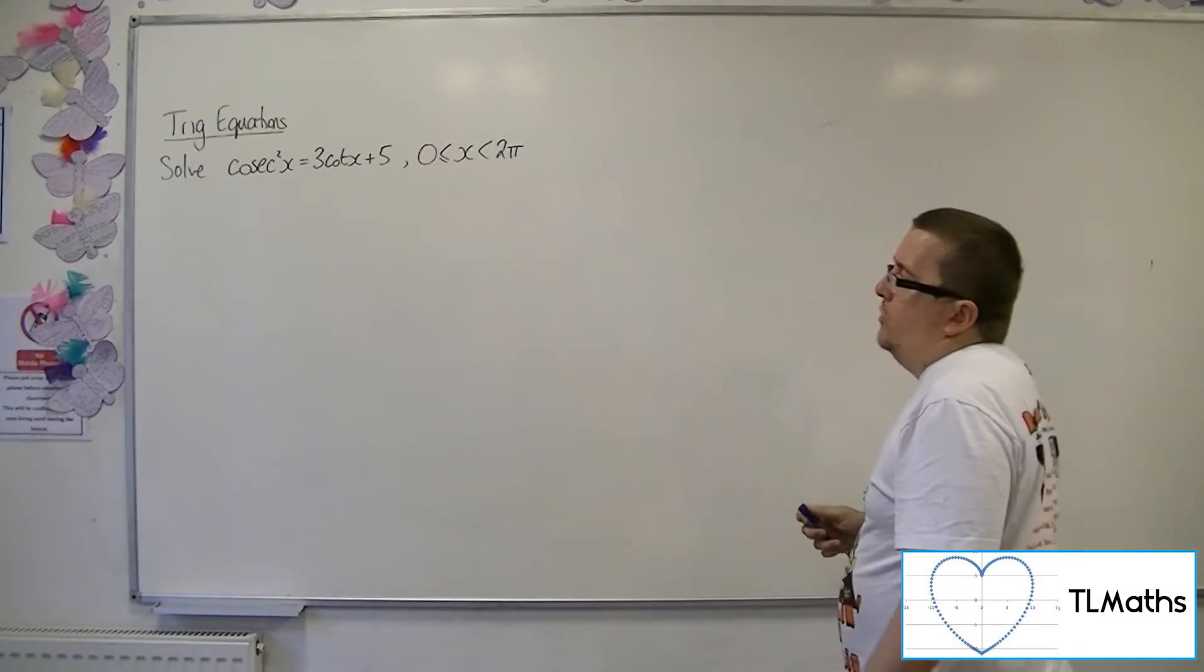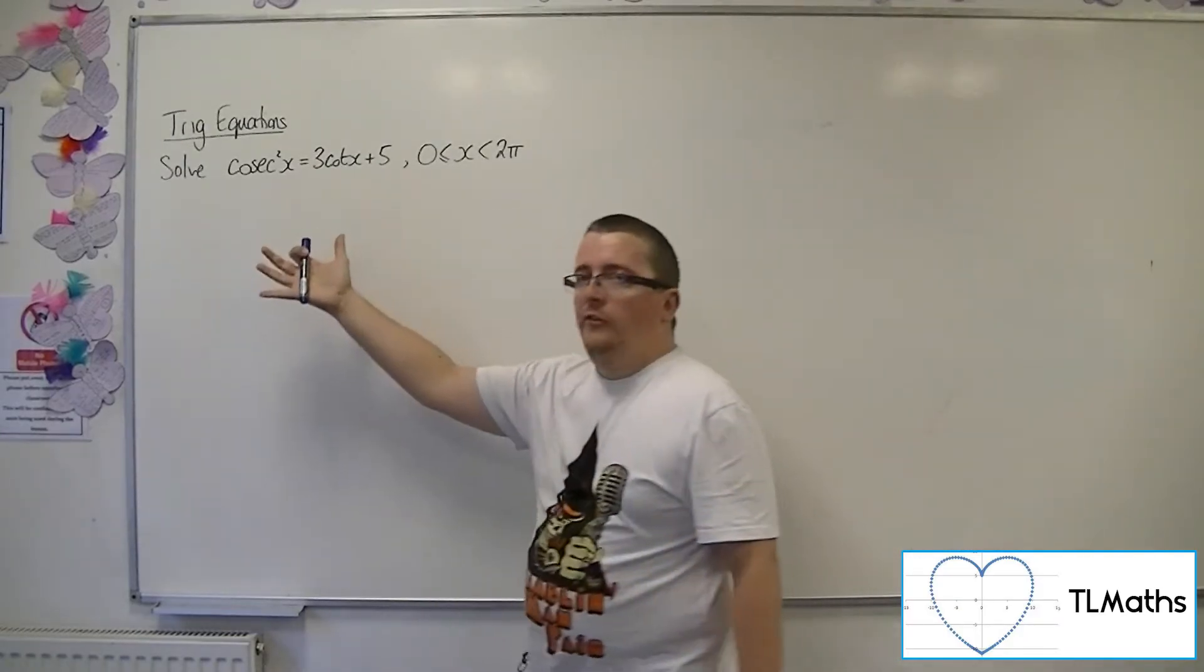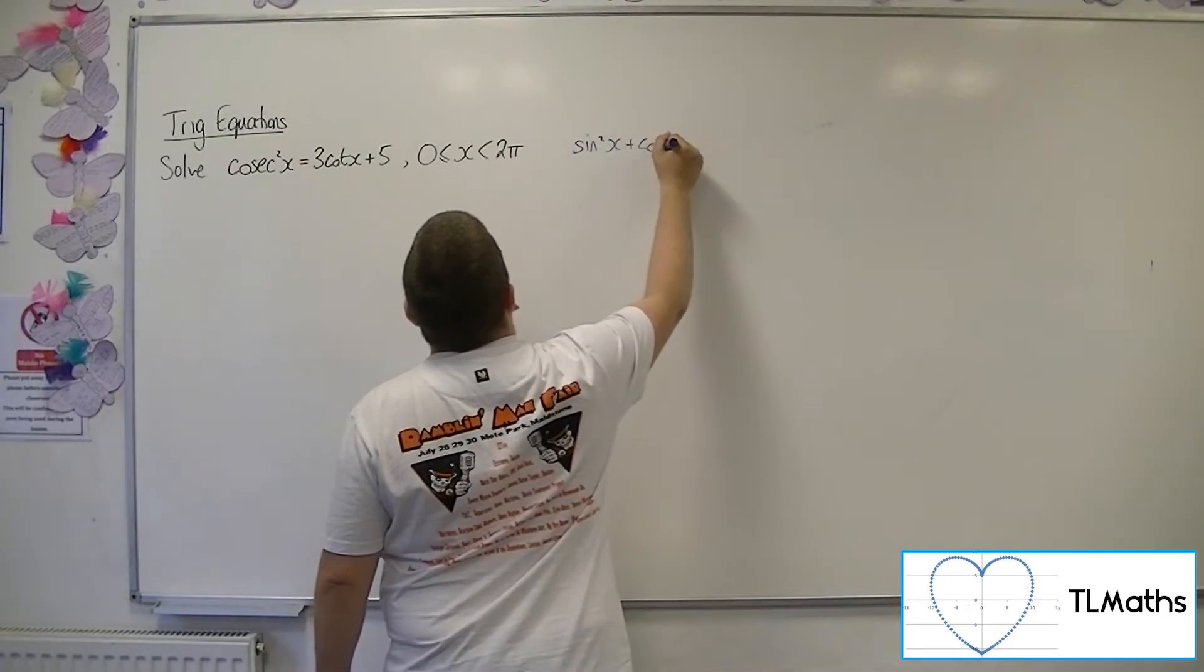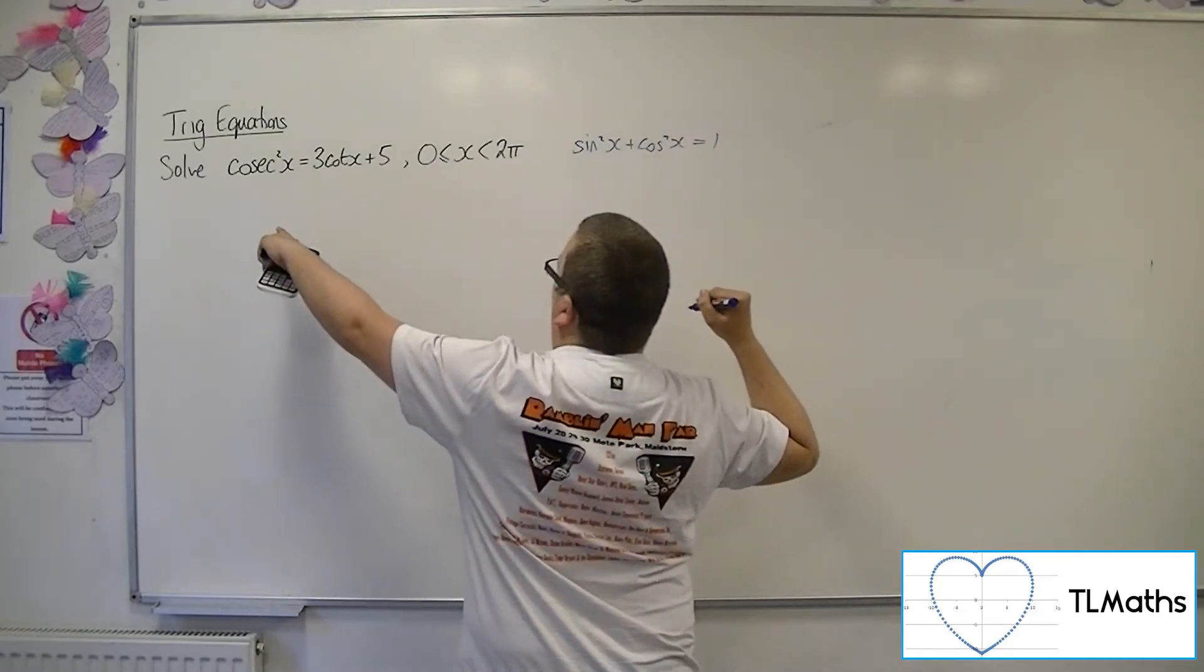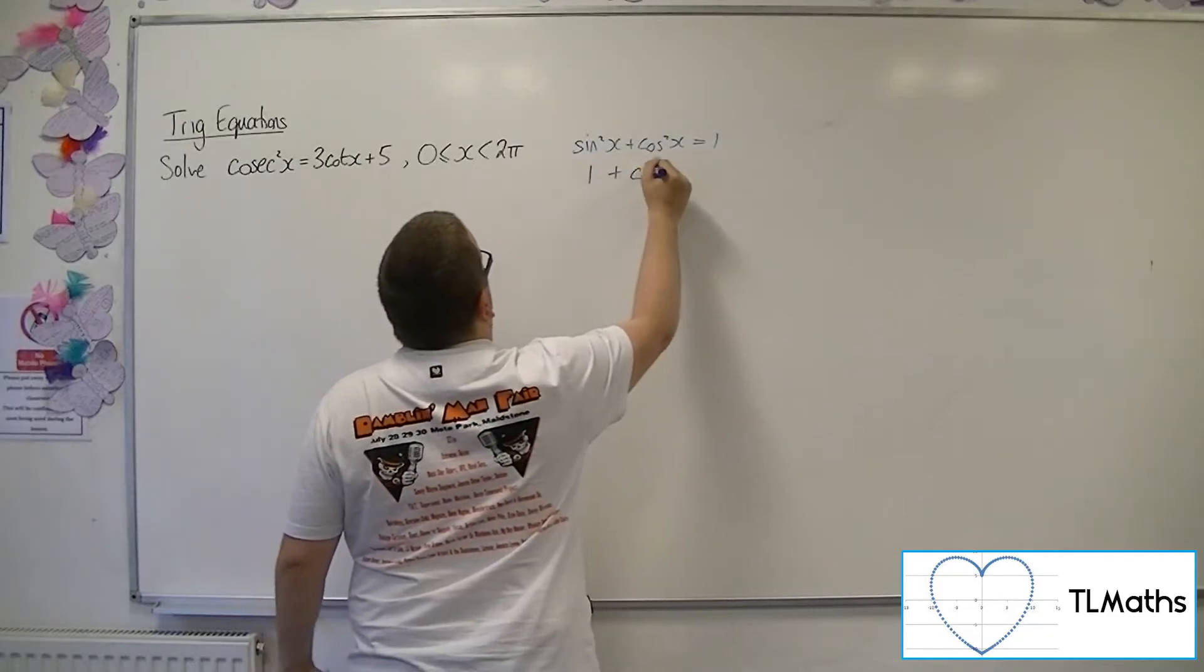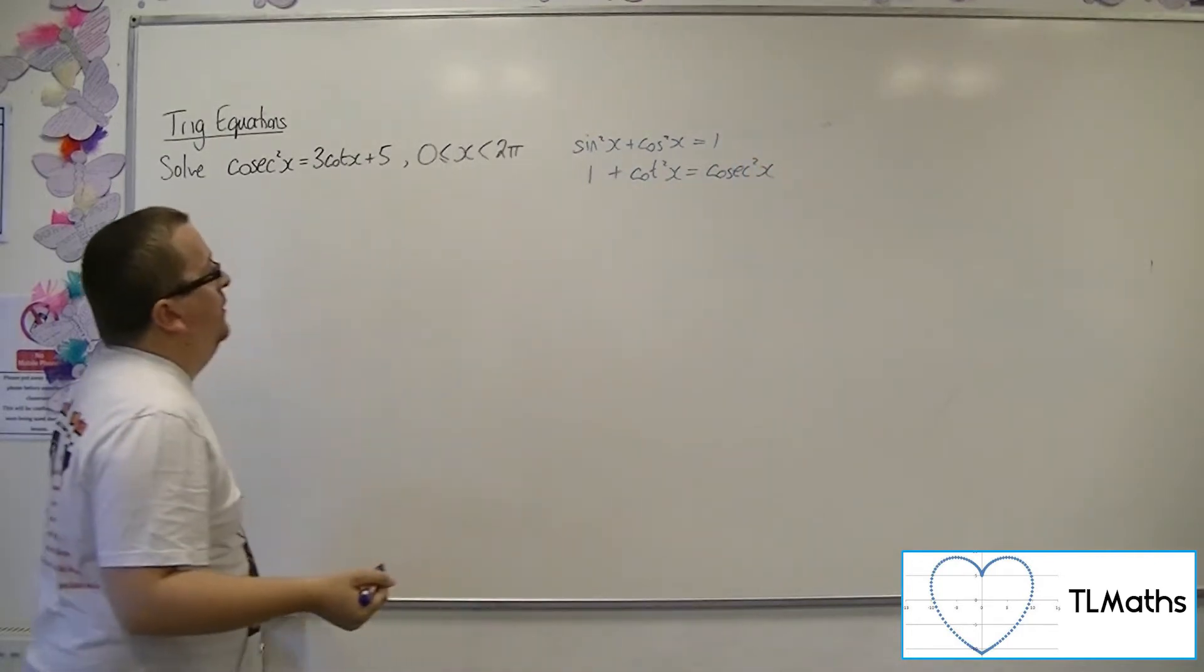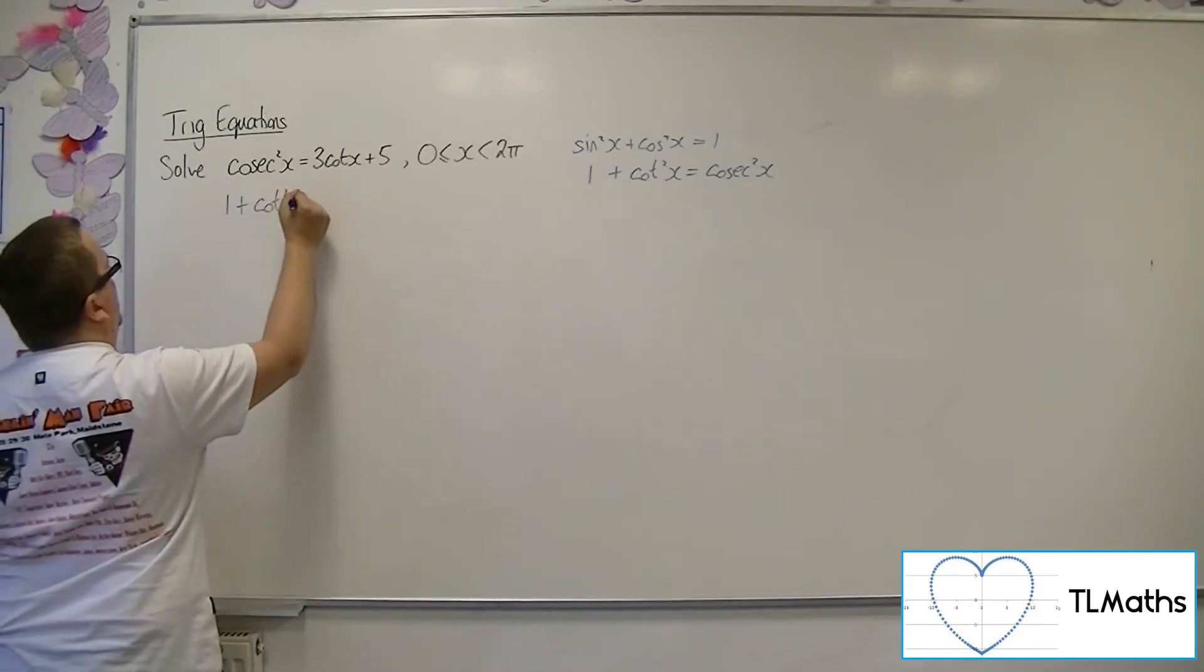Now, I need to use a trigonometric identity to get this into a quadratic that just involves cot. So starting off with sin squared plus cos squared is 1, I'm looking for a replacement for cos x squared. So I'm going to need to divide through by sin squared to give me 1 plus cot squared is cosec squared. So cos x squared can be replaced with 1 plus cot squared x.